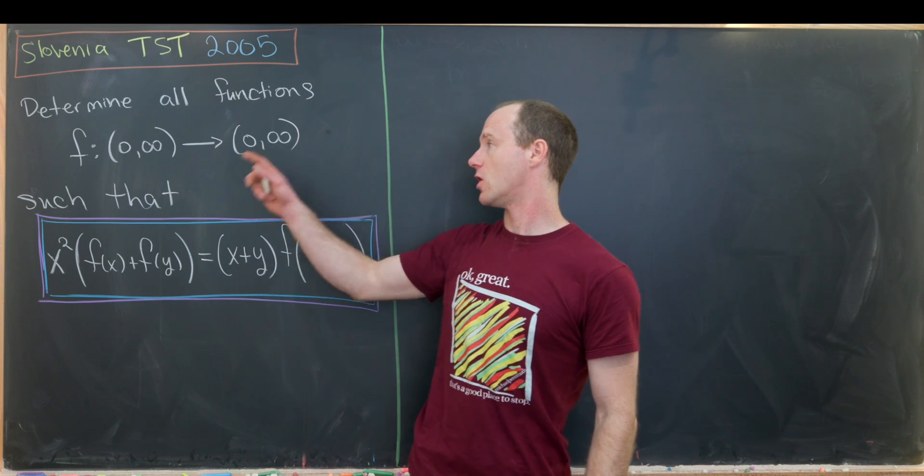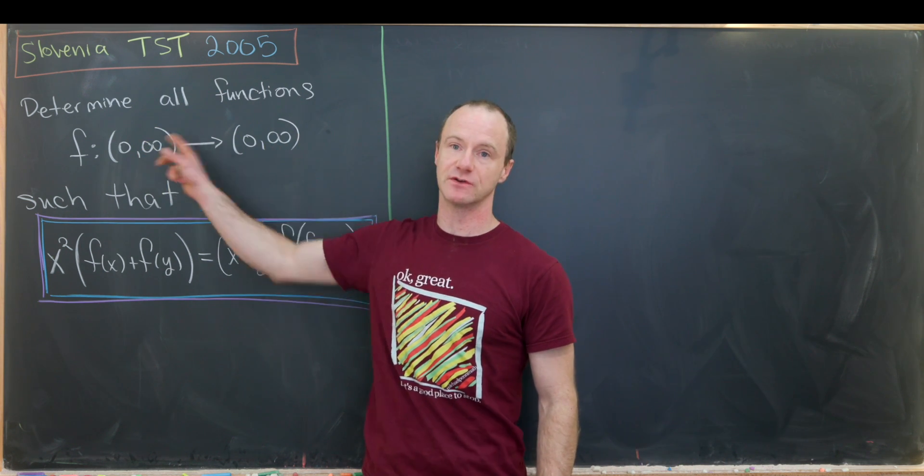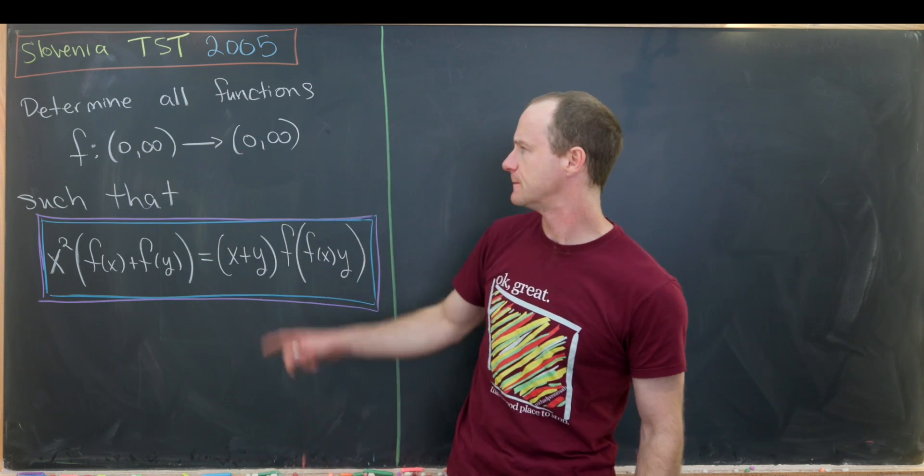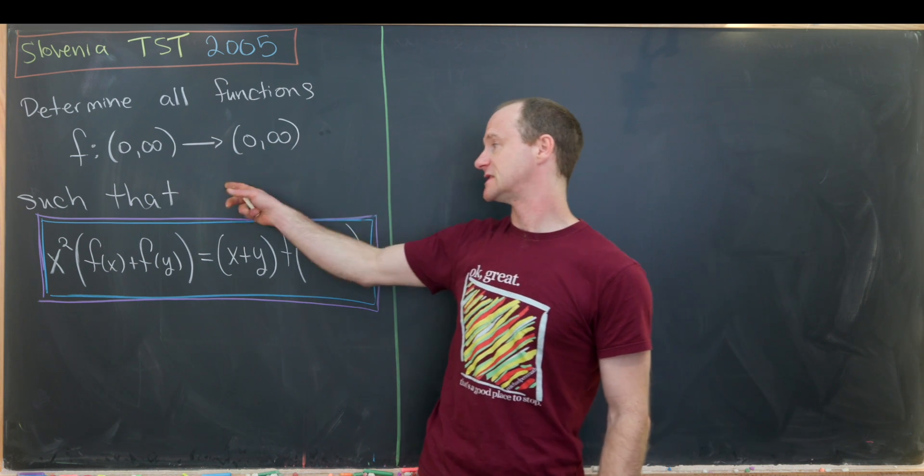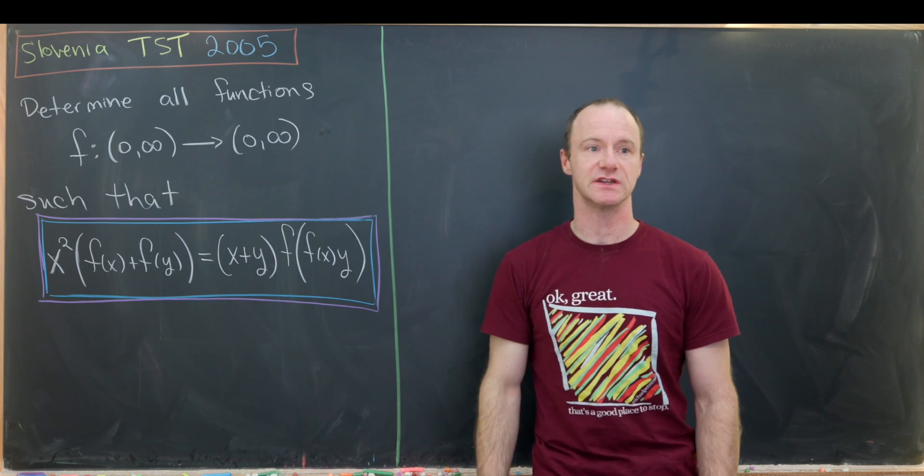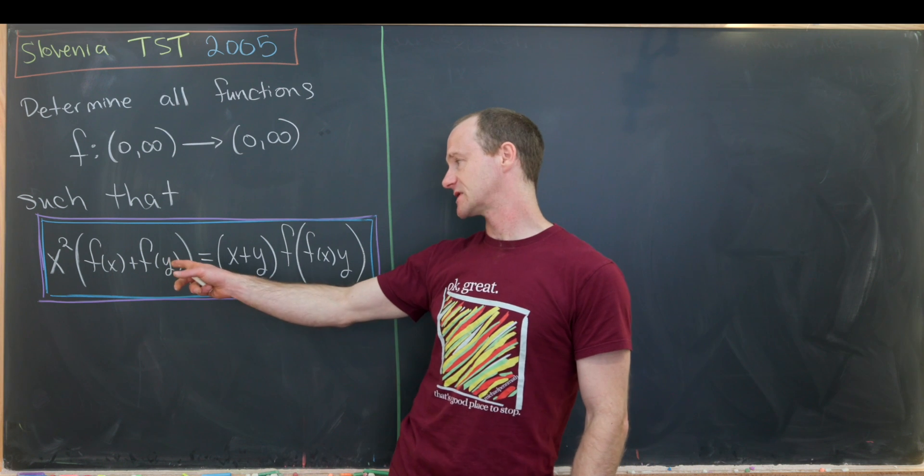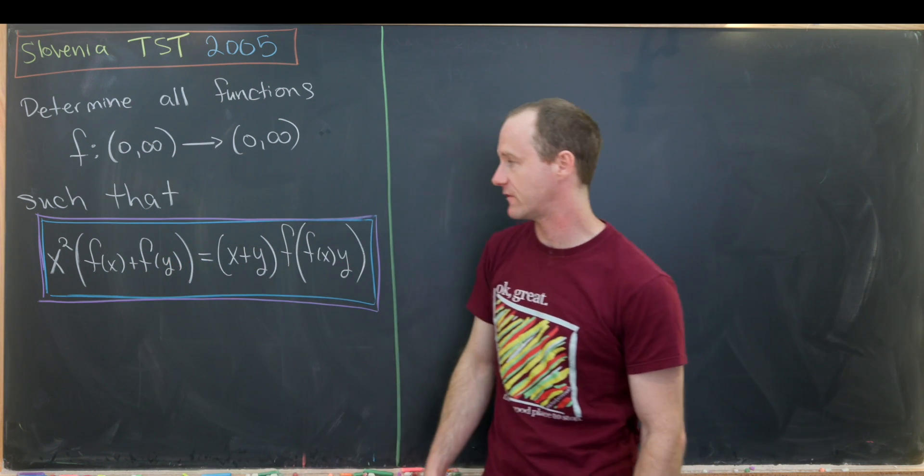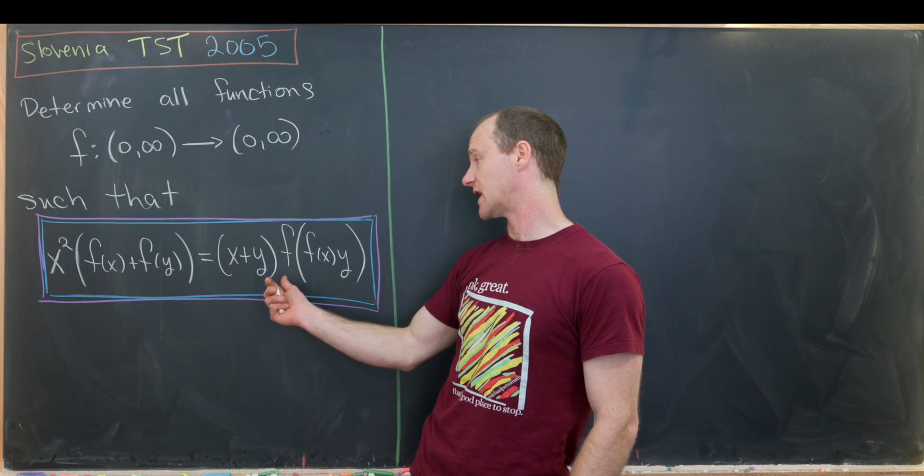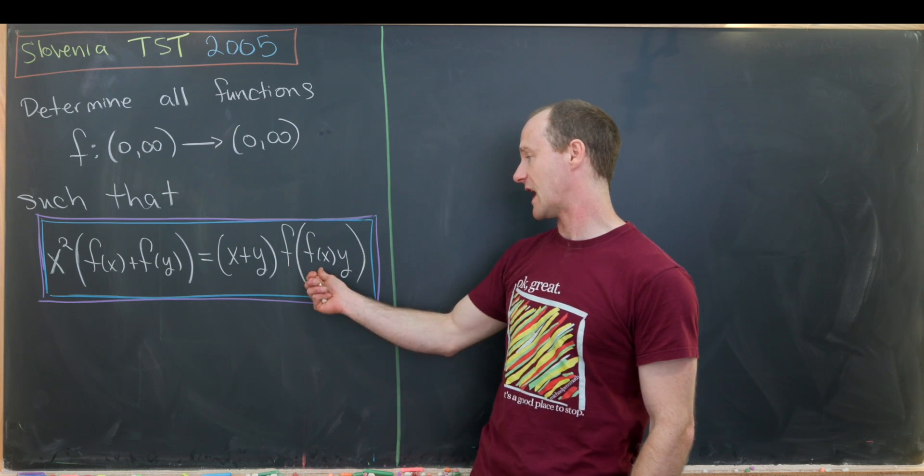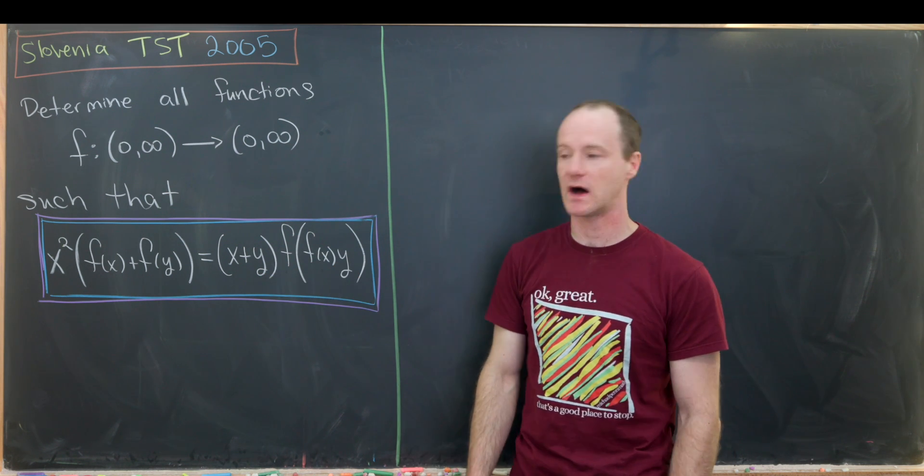Our goal is to determine all functions from the interval (0,∞) to (0,∞). So by this, I mean the positive real numbers, satisfying this functional equation. We have x² times the quantity f(x) + f(y), and then we have (x+y) times f evaluated at f(x) times y.